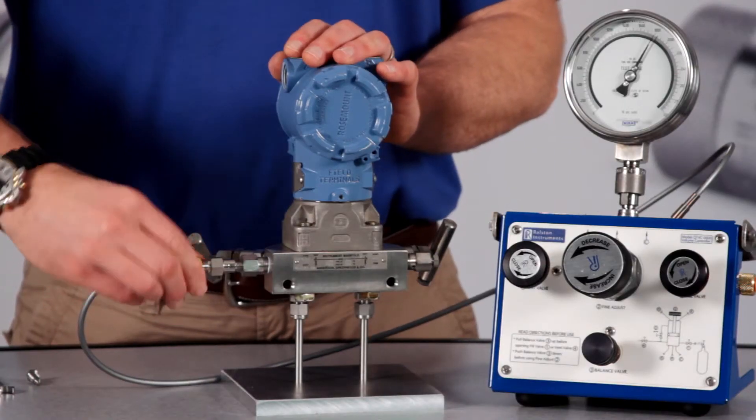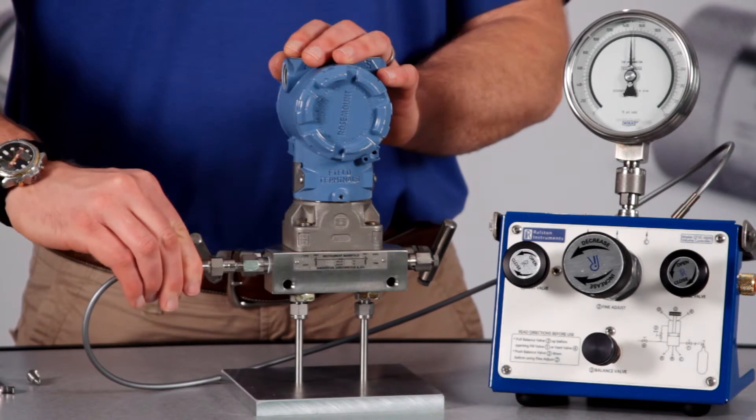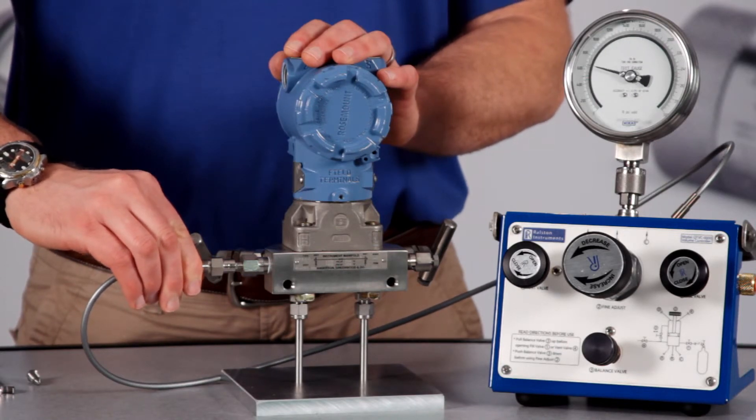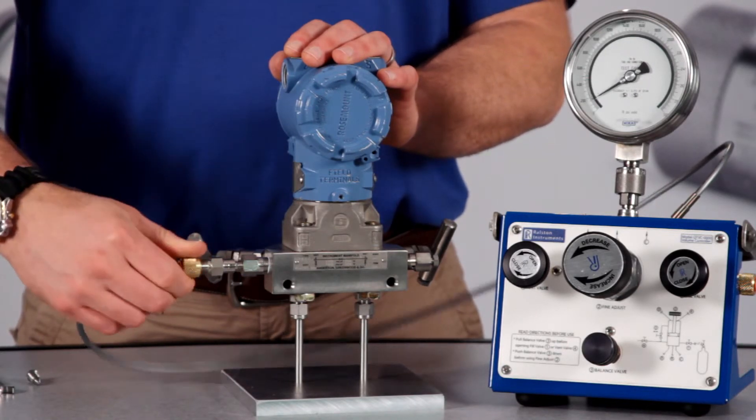When you're done, if you forget to vent off the pressure with the valve, the Ralston quick test connection will safely self-vent instead of blowing off.